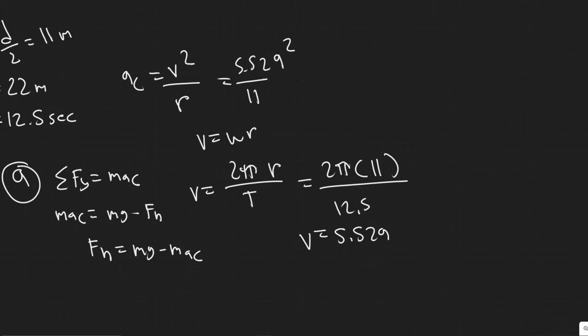And then keep in mind, this value is squared. So if I square this value, divide by 11, you will get 2.779, which is just about 2.78. And then the units are going to be meters per second squared, since this is acceleration.